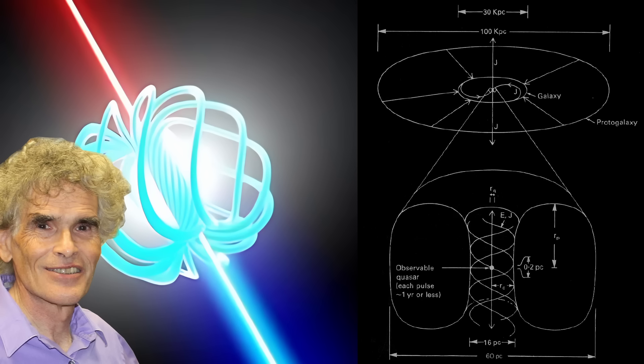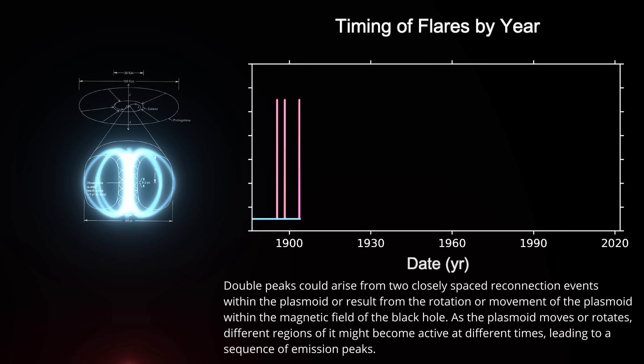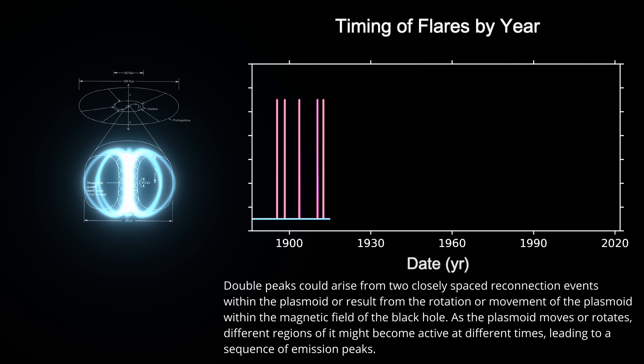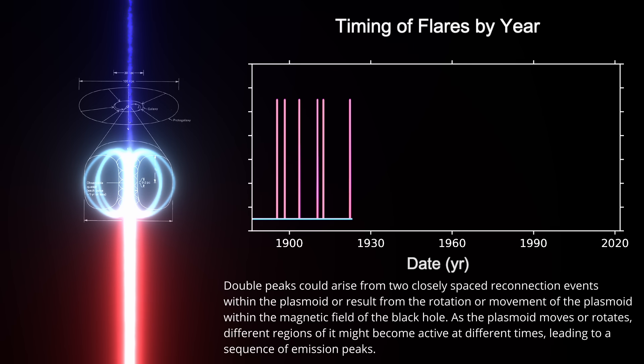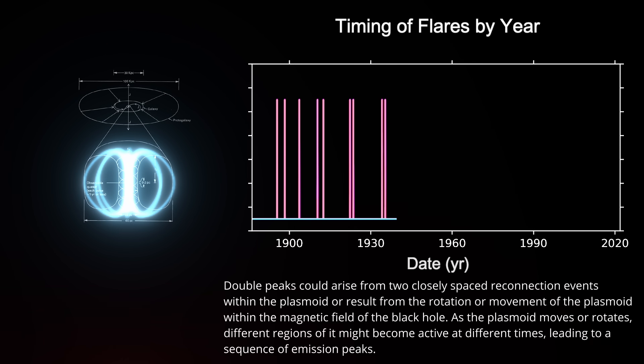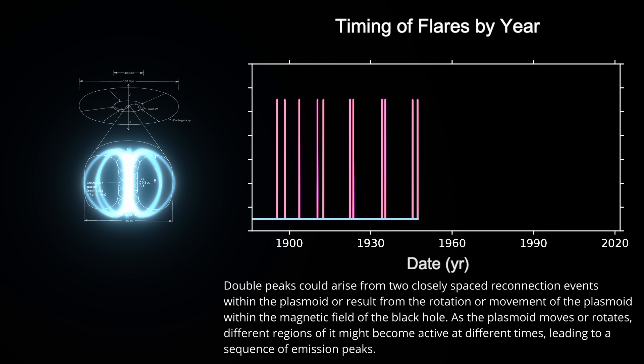While Lerner's Plasmoid model provides an alternative framework to black hole centric models for explaining AGN behaviors, observational support for plasmoid existence and characteristics in specific AGNs like OJ287 is still being explored. The observations of flatter spectra during flares aligns with the idea that plasmoids can produce emissions that vary differently from those expected in more traditional models, focused solely on accretion disk dynamics around supermassive black holes. Applying Lerner's Plasmoid model to explain specific observations requires detailed comparisons with existing data and theoretical predictions. It involves testing whether the model can consistently explain the variability, spectral characteristics and other observed phenomena in AGN like OJ287.